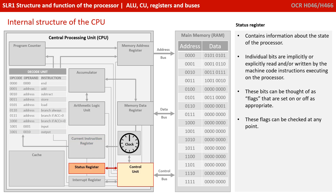Next we have the status register. This contains information about various states inside the processor. Individual bits can be implicitly or explicitly read or written to by machine code instructions inside the processor. These bits are effectively like on and off flags, and these flags can be checked at any point to work out various statuses.